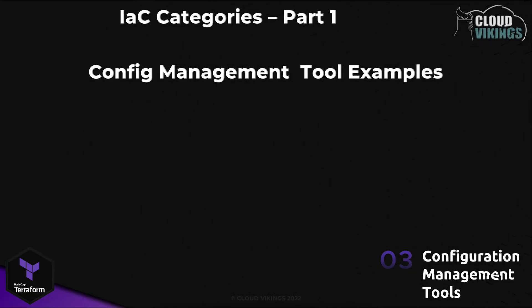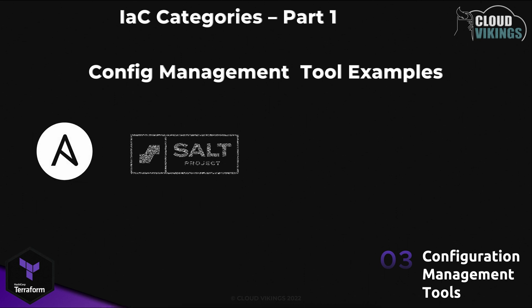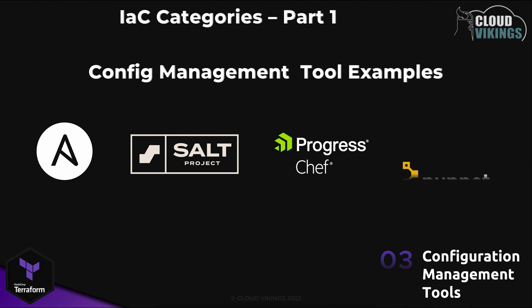The next category to understand is configuration management tools. Popular tools in this category are Ansible, Salt, Chef, and Puppet. Their main focus is to remotely manage the configuration state of resources like physical servers, virtual machines, databases, and so forth.